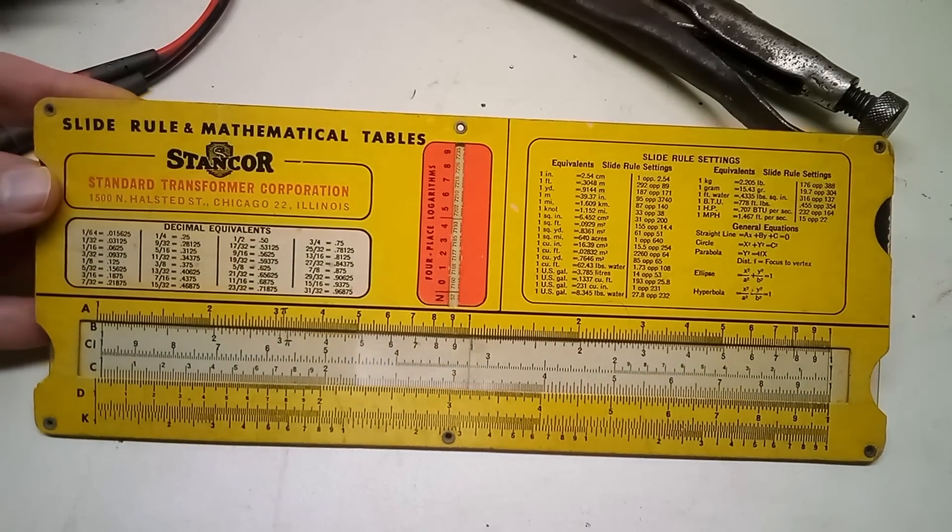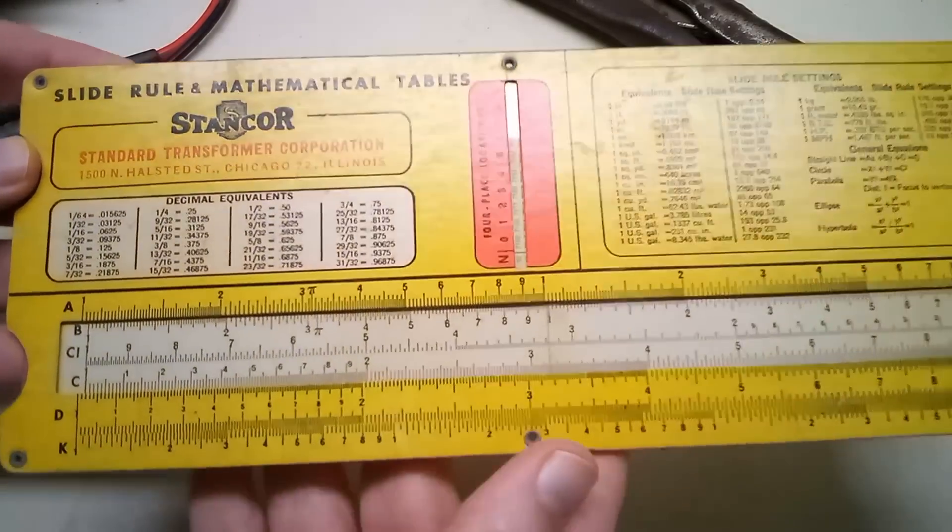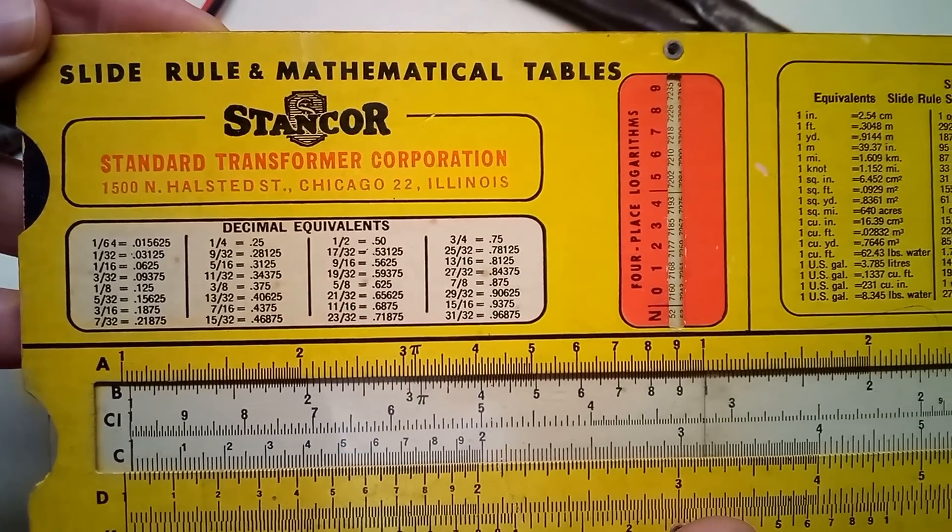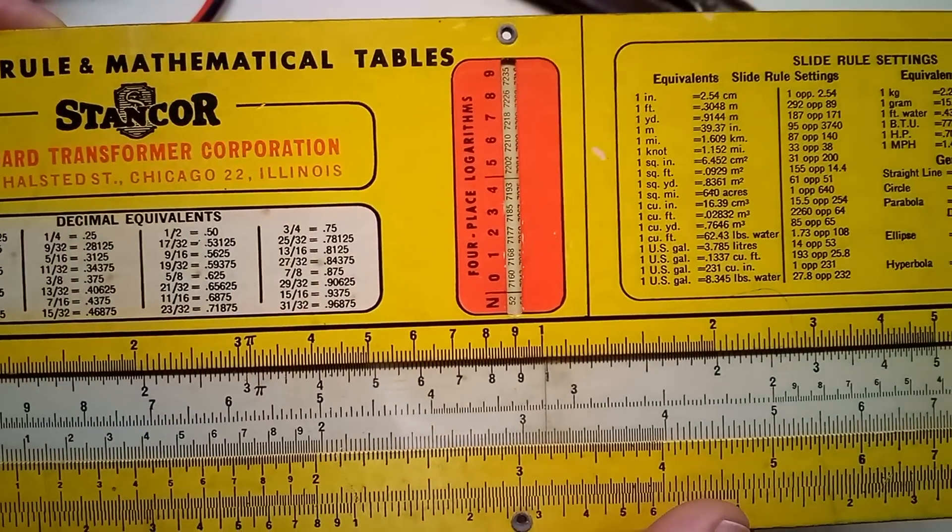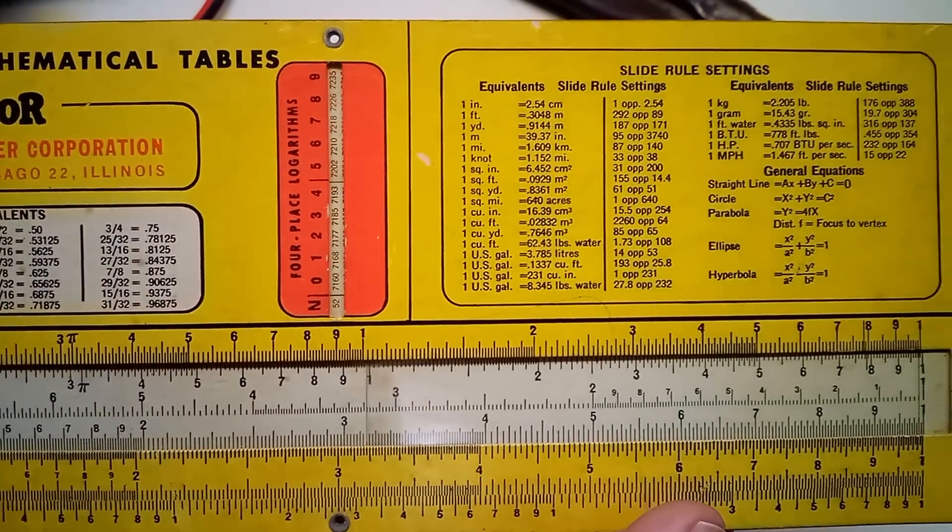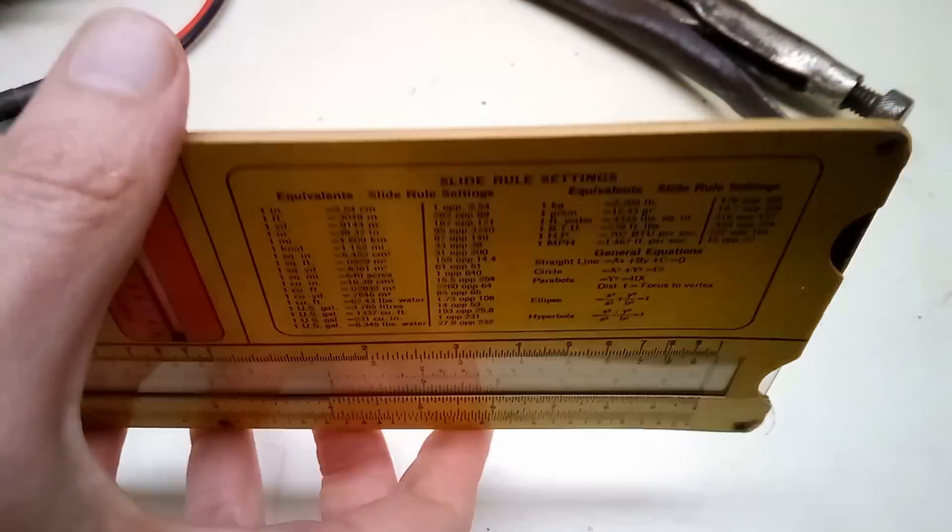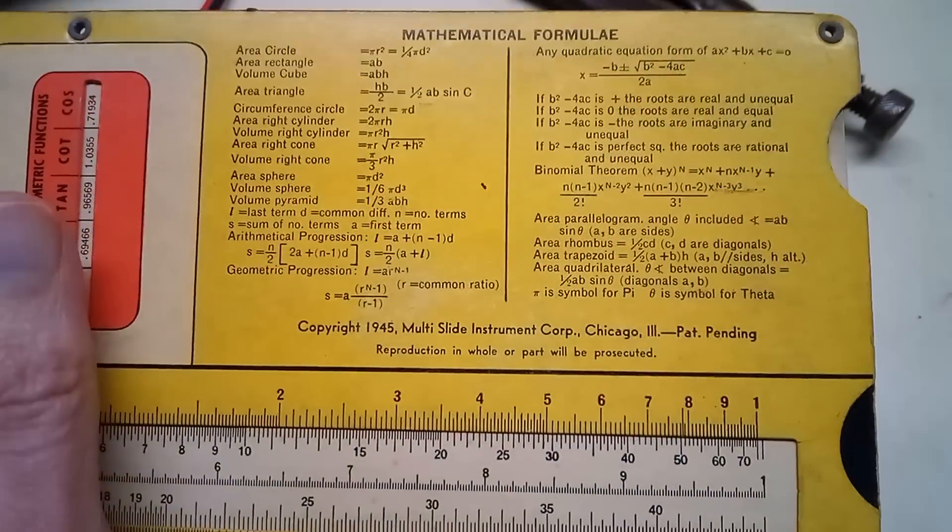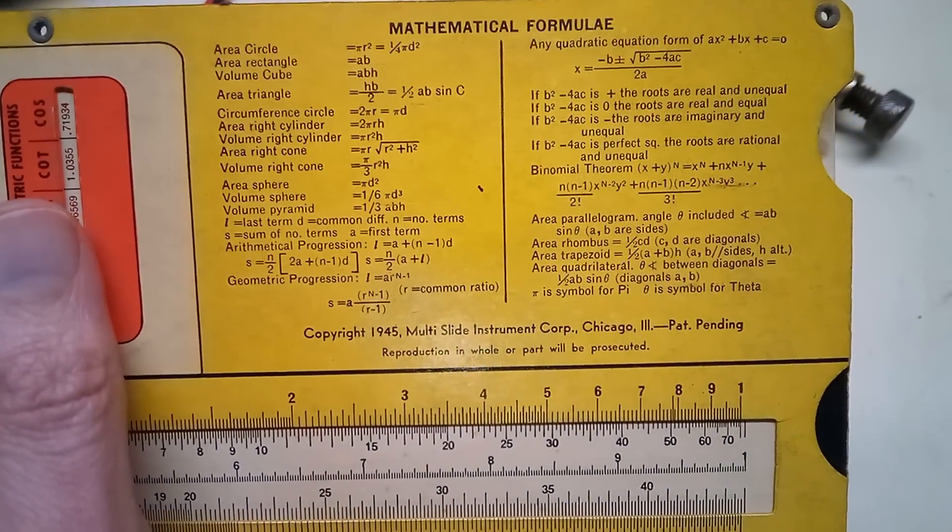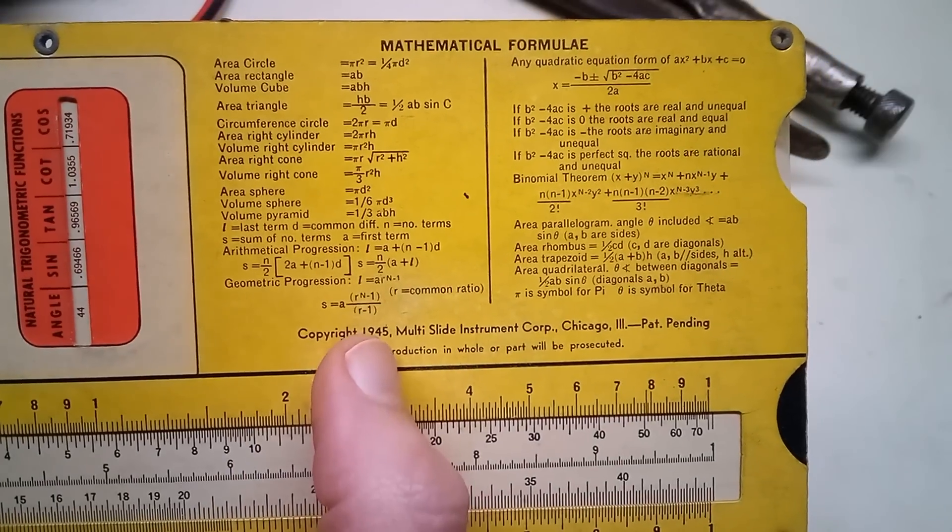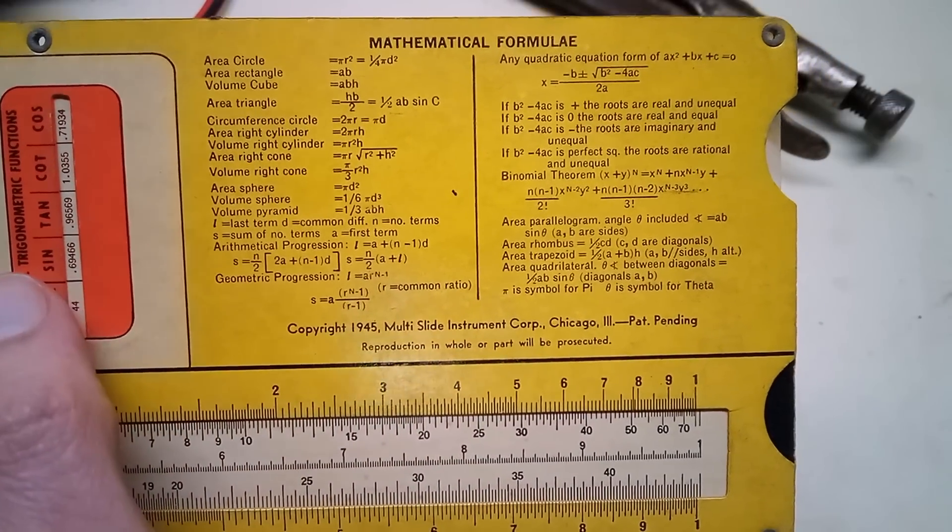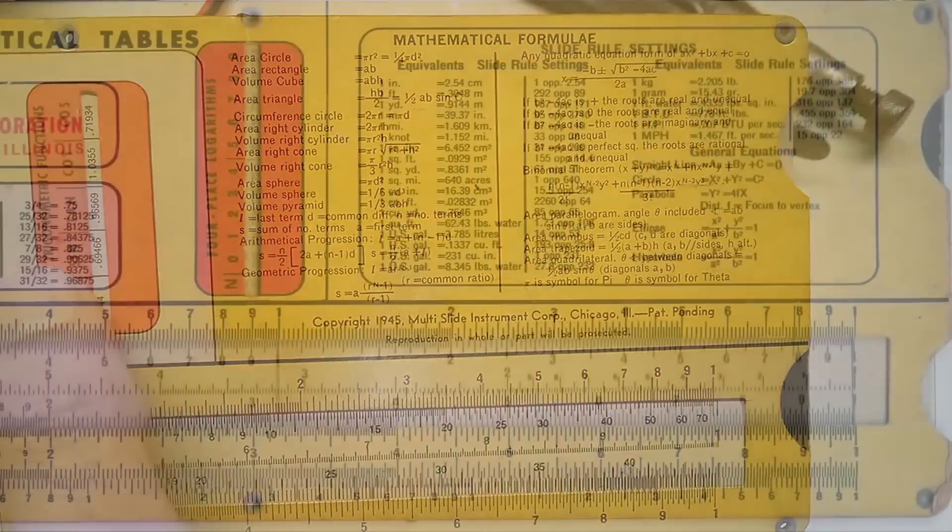It's made out of cardboard and it's from Stancor Standard Transformer Corporation. So this would have been some kind of freebie promotional item that they would have given out. It dates back to 1945 and was made by the Multi-Slide Instrument Corp in Chicago. Despite being made out of cardboard, this was a pretty powerful tool.